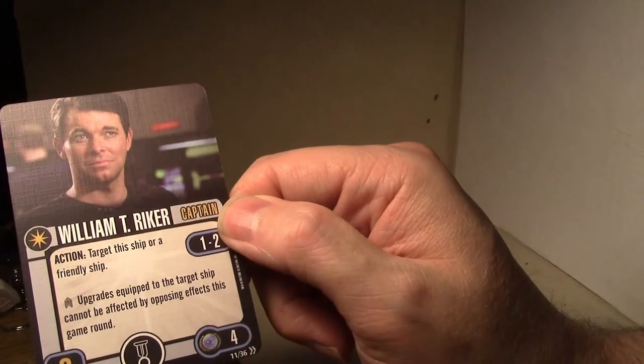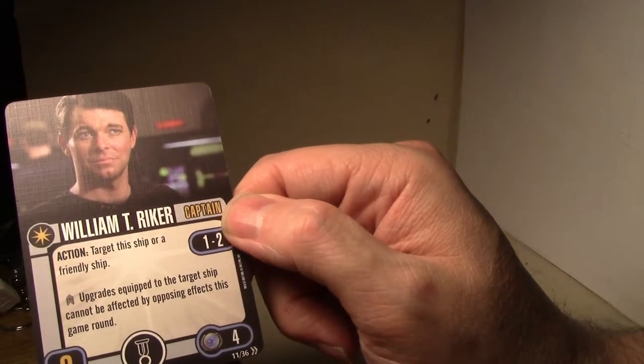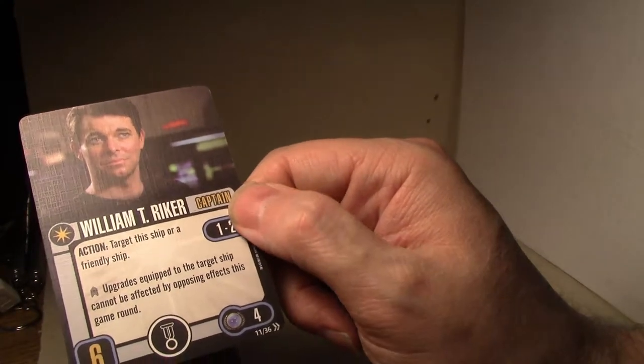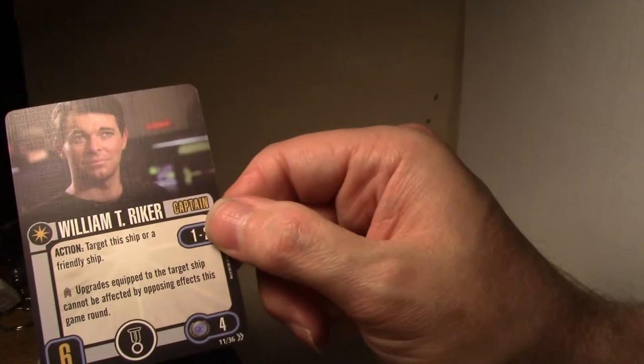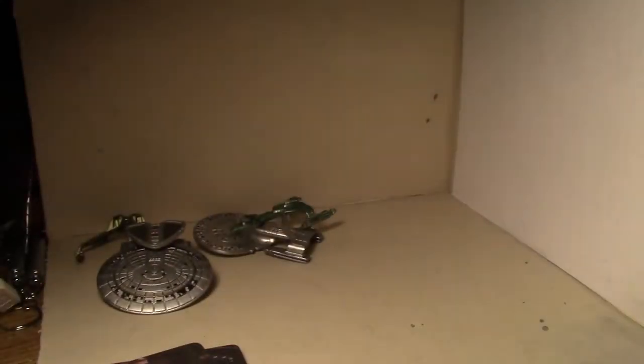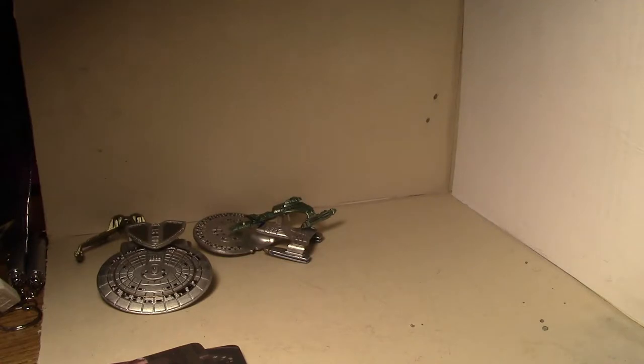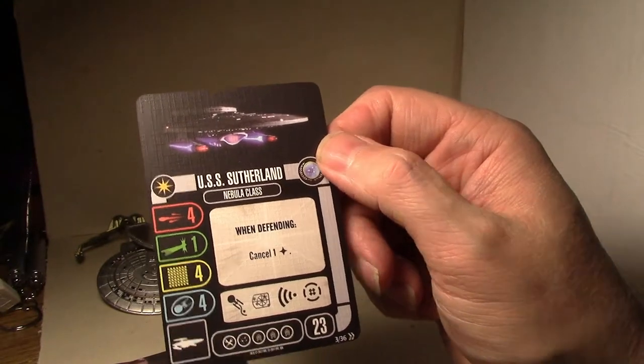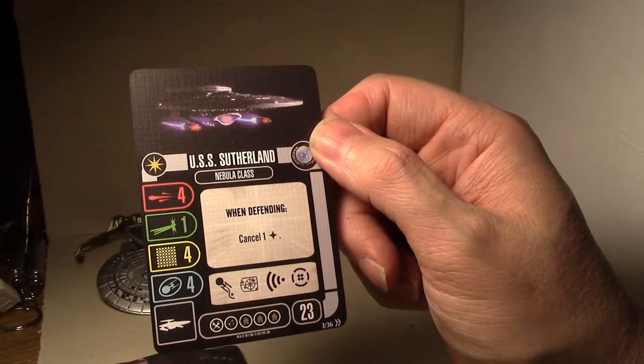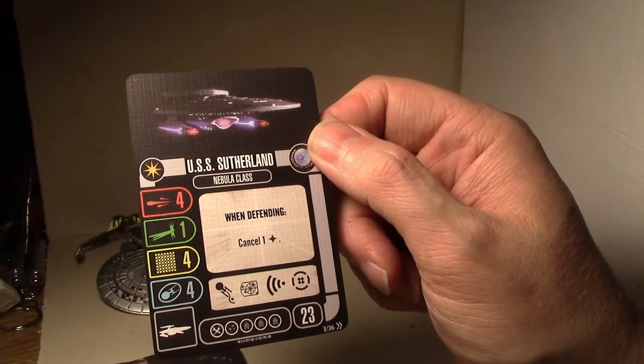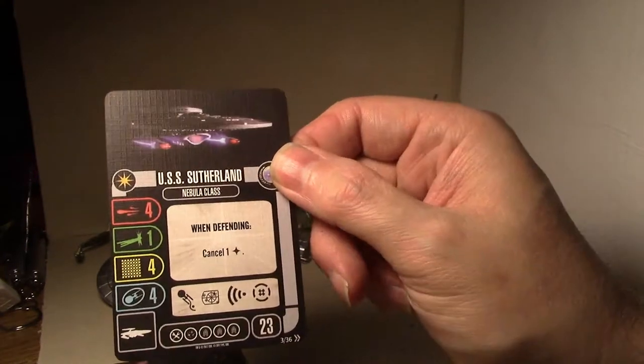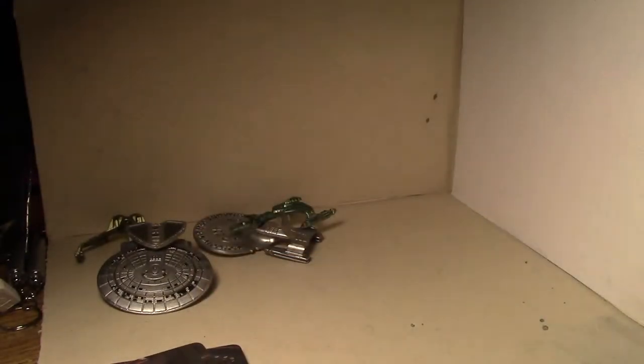Captain Riker. Target this ship or a friendly ship. Crew upgrades equipped to the target ship cannot be affected by opposing effects this game round. So, it's crew protection. And that's really all he does. Six skill, four points. Here we go. USS Sutherland. When defending, cancel one hit. Pure straight up. Every time he defends, he gets one less damage. This card is amazing. For 23 points. For 4-1-4-4. This is great. This is an absolutely fantastic card. It's a good way to keep your stuff alive.